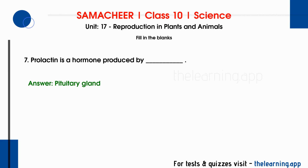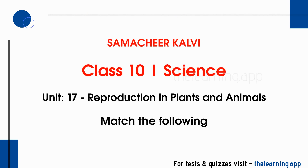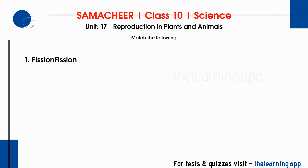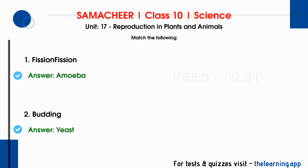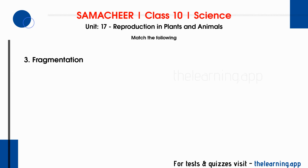Next, we will talk about the match the following. Column A contains types of asexual reproduction, and Column B contains examples of living organisms. First: fission — Amoeba. Second: budding — Yeast. Third: fragmentation — Spirogyra. Spirogyra reproduces by fragmentation.